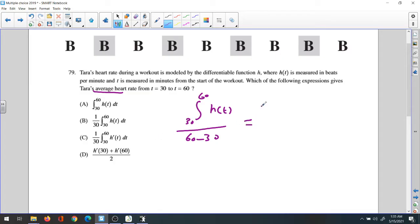So it's going to be 1 over 30, integrate H(T) from 30 to 60. Nothing right but B. B is the correct answer.